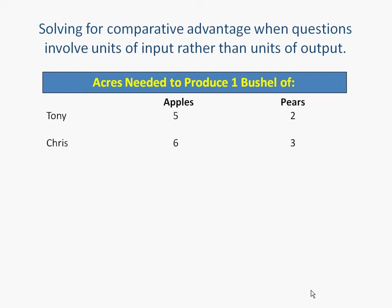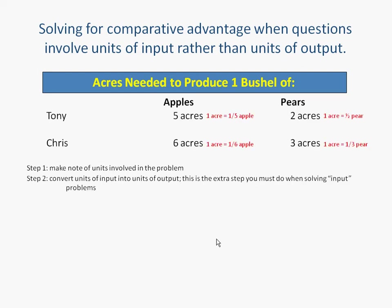So here we go. We first make a note of the units involved — this question is about acreage, not about apples and pears yet. The second step is making it into a problem that involves apples and pears, and so what we have to do is convert units of input into units of output. We take a look at Tony: Tony's got five acres which will produce him one bushel of apples. So we divide by five in order to get down to one acre, which gives us one-fifth of a bushel of apples.